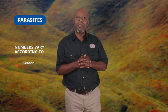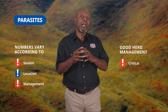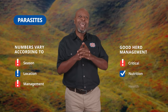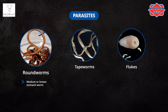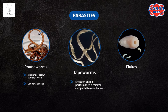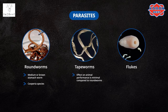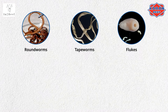Parasite numbers vary according to season, location, and management. Good herd management is therefore critical to avoid outbreaks of infection from these parasites, including good nutrition and a health program. Cattle can be infected by roundworms, tapeworms, and flukes. The medium or brown stomach worm and the Cooperia species are the most common roundworms. Even though cattle can be infected with tapeworms, their effect on animal performance is minimal compared to roundworms. Problems with flukes arise in environments that promote snail populations such as poorly drained pastures and stagnant pools of water. Immunity to worms starts to develop at about 5 months of age and is fully expressed by about 18 months. This immunity can be compromised during periods of very wet weather and poor nutrition.